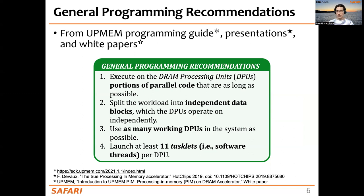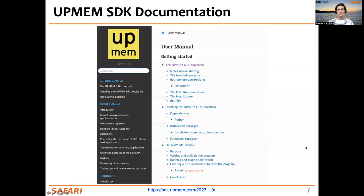We did analysis on the arithmetic throughput of the DPU pipeline and observed that the saturation point of the arithmetic throughput happens at 11 tasklets. For in-depth support, I would refer everyone to check the UPMEM SDK documentation — you can find the link at the bottom of the slide.